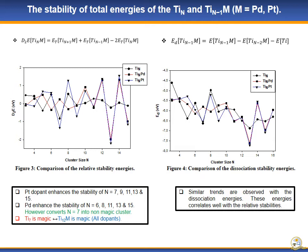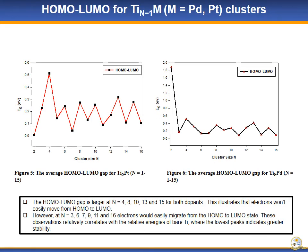Figure 4 reveals the same energy trend as the relative stability. Figures 5 and 6 reveal large HOMO-LUMO gaps for N equals 4, 8, 10, 13, and 15.